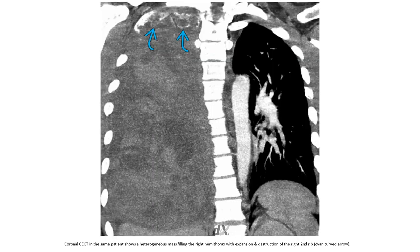The same patient on contrast-enhanced CT shows a heterogeneous mass filling the right hemithorax, with expansion and destruction of the right second rib.